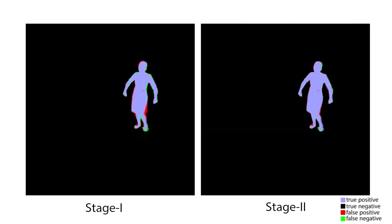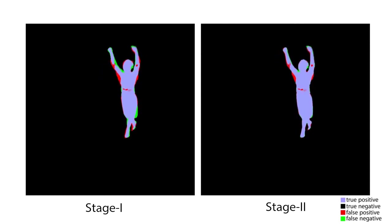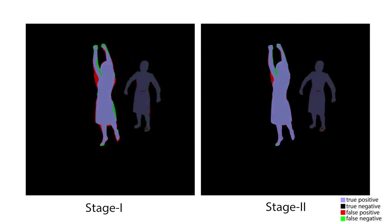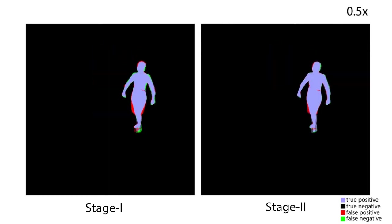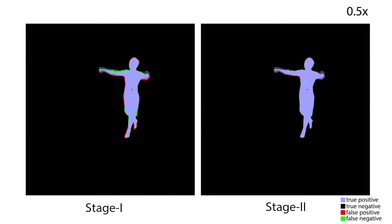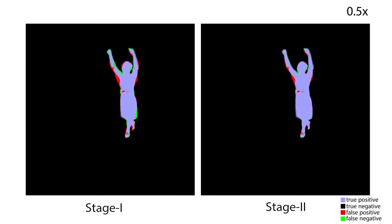Here we evaluate our method in an indoor sequence, which has ground truth silhouettes available. Notice that stage 2 significantly improves the alignment of the reprojected 3D model and the silhouette.